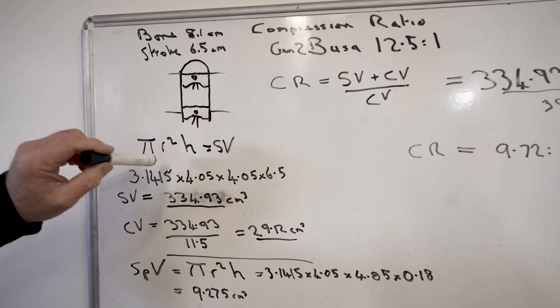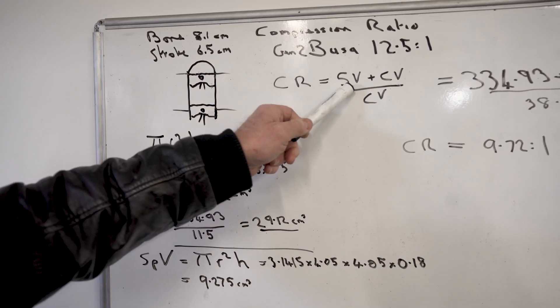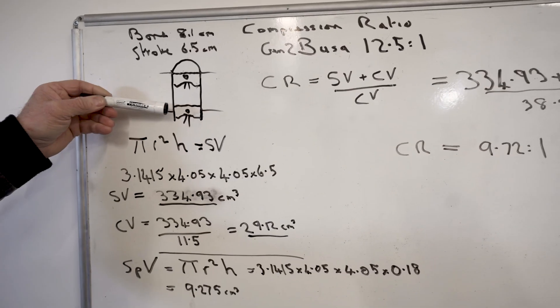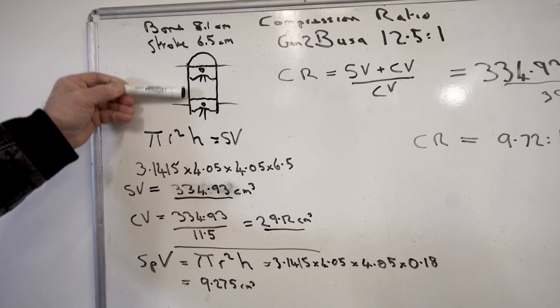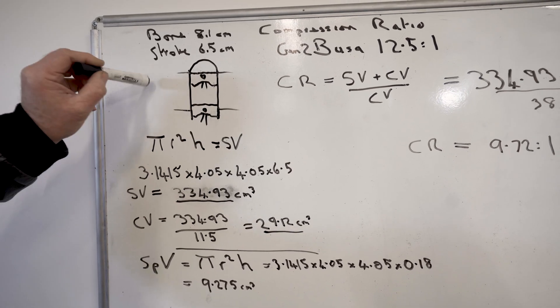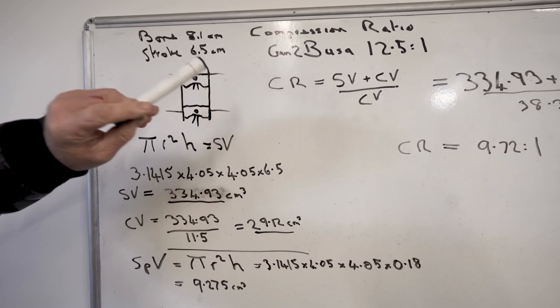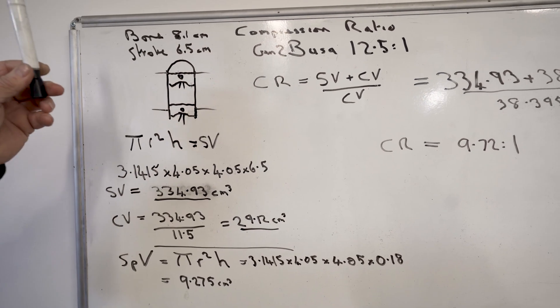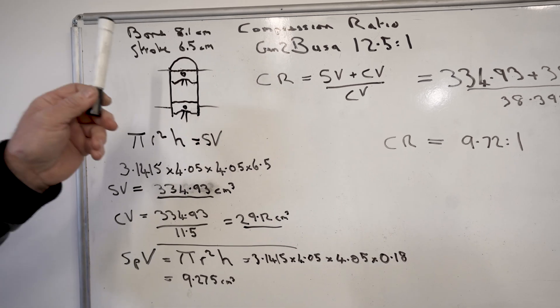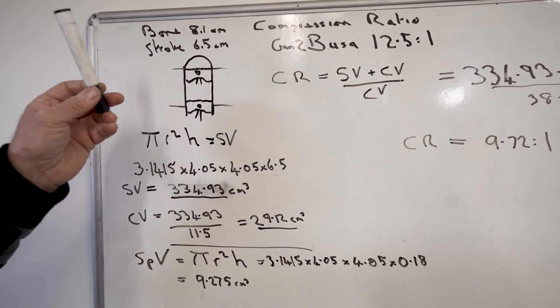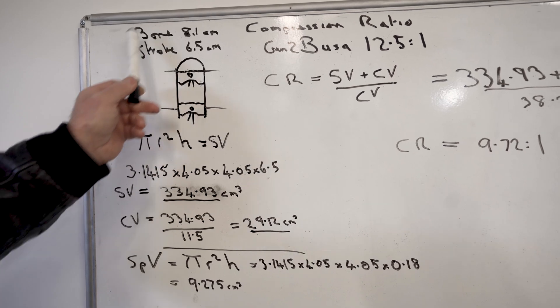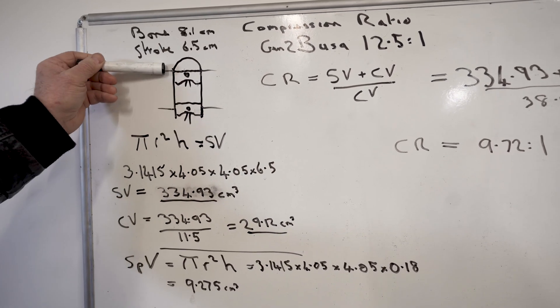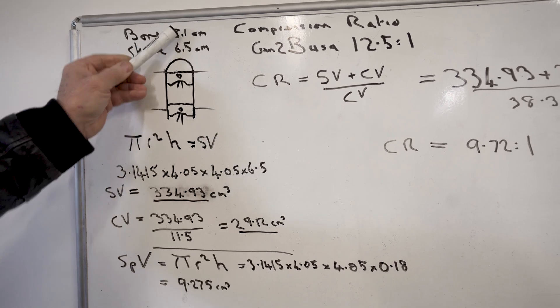The compression ratio is the swept volume plus the compressed volume divided by the compressed volume. Swept volume is piston bottom to the top of its stroke, which on our Hayabusa we'll call it in centimeters because we're talking about an engine that is 1340 cc's, which is cubic centimeters. So let's do everything in centimeters. The stroke is 6.5 centimeters, the bore is 8.1 centimeters.